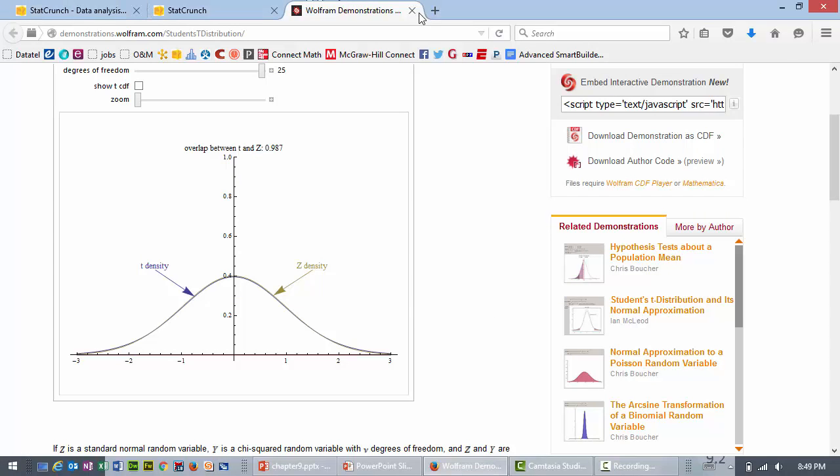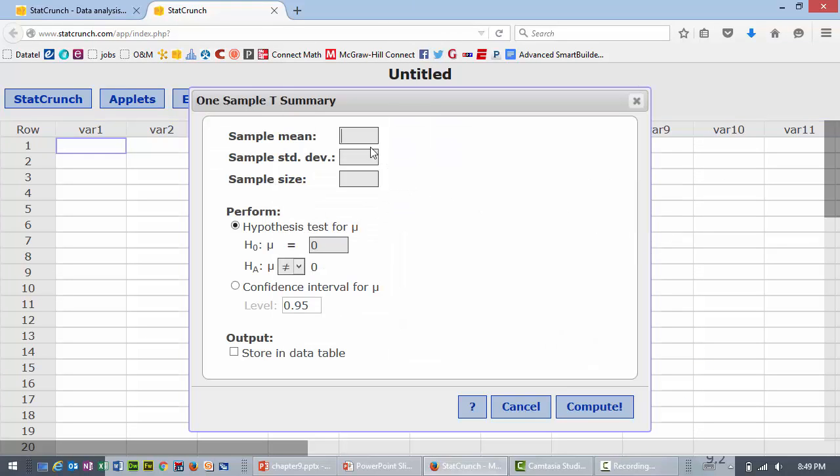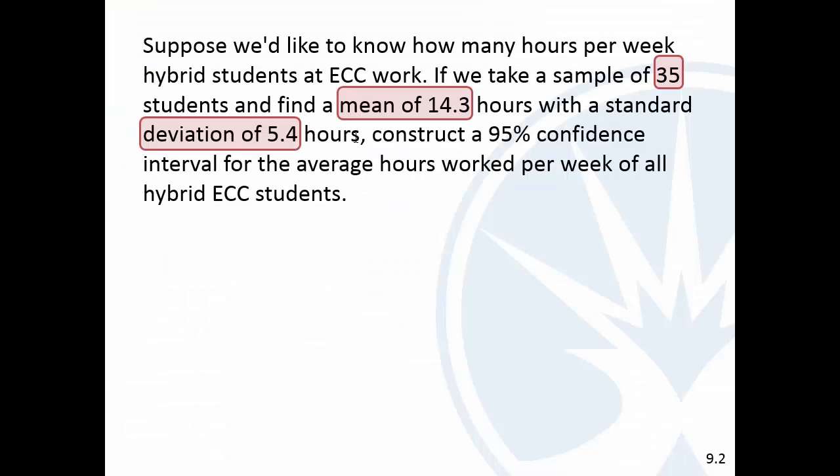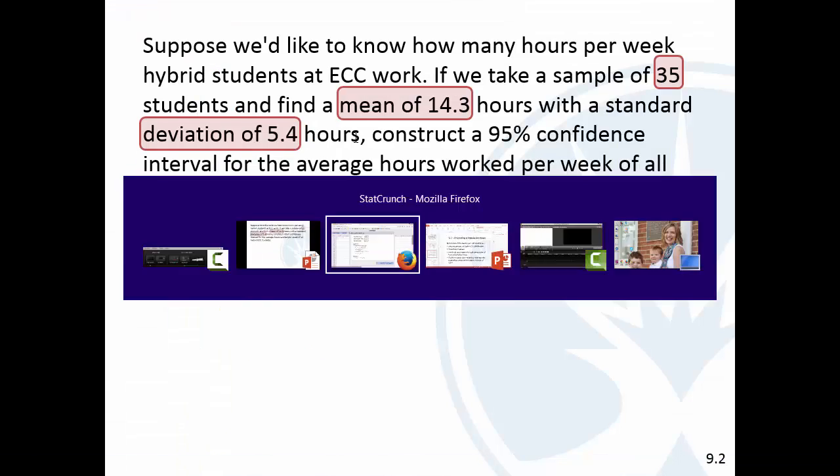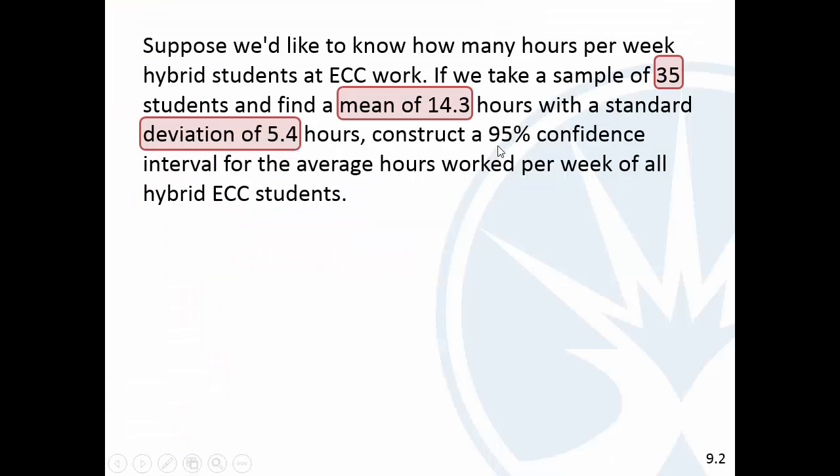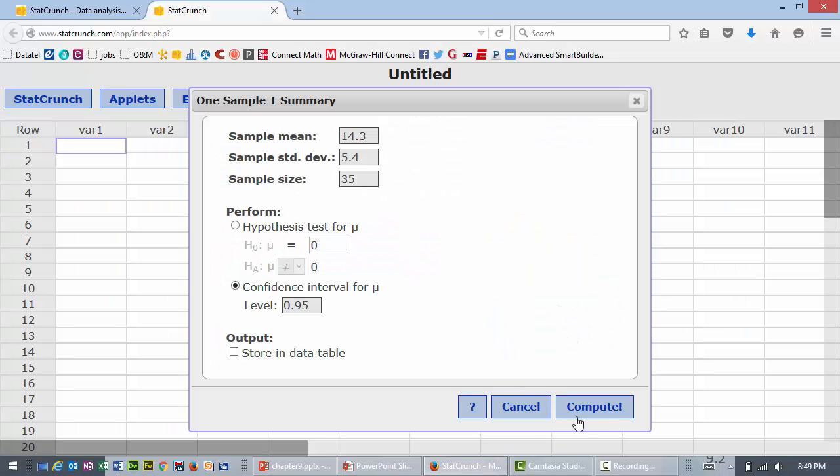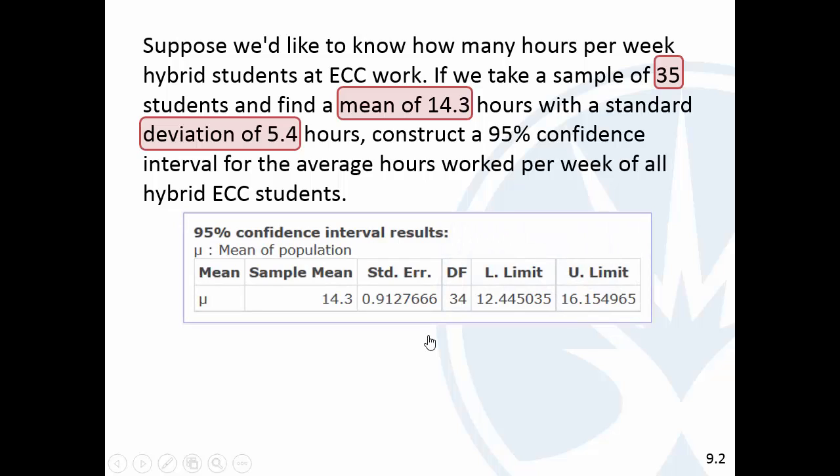So, let me move back over to here. So, we'll do stat, where was it, t stats, one sample with summary, the mean was 14.3, standard deviation, I've got to remember this stuff, 5.4, sample size was 35, I remember that. Confidence interval, did we want 95, yep, 95, and hit compute, and here we go, and I actually already had that screenshot done.